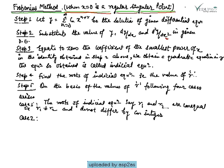At a regular singular point, we solve the problem by the Frobenius method, which is an extension of the power series method. Following the steps of Frobenius method, step one is: let y equal to summation from n=0 to infinity of c_n times x to the power (n+r) be the solution of the given differential equation.